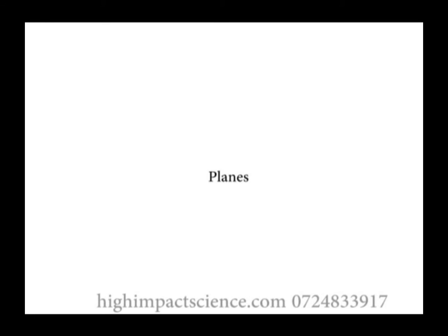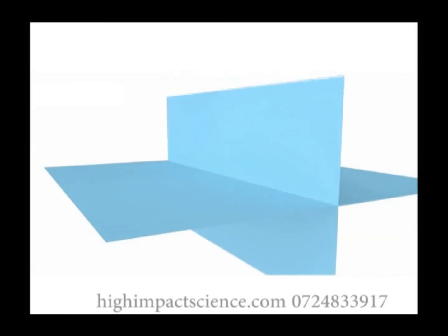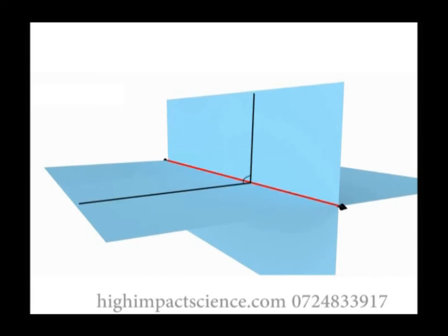Planes. A plane is a flat two-dimensional surface that extends indefinitely. When two planes intersect each other, the intersection is a straight line. The angle formed by two intersecting planes is equal to the angle formed by two lines drawn on each of the planes.